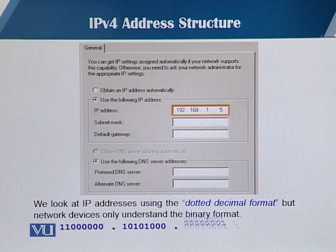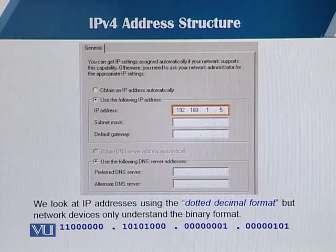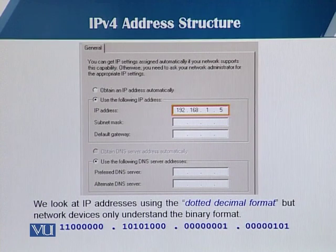As you can see from the slide, 192.168.1.5 is the IP address that we are familiar with — it's a dotted decimal notation address. At the bottom, you see the binary format of this dotted decimal IP address. This is how computers or machines are going to understand an IP address.